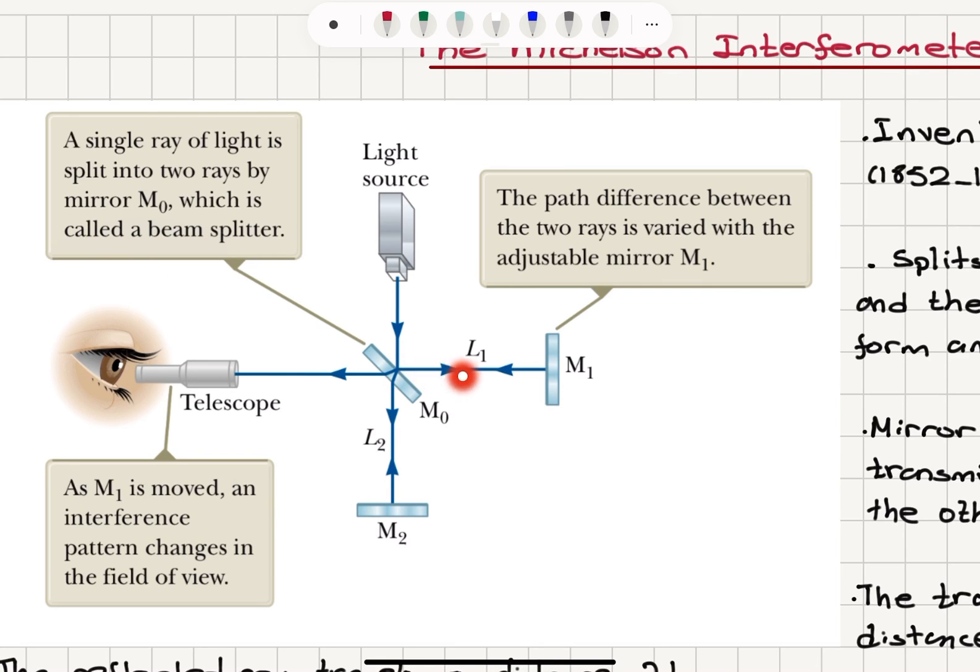A single ray of light is split into two rays by mirror M0, which is called the beam splitter. We have half the intensity traveling to mirror M1 on the right and half the intensity is transmitted, traveling towards M2, mirror M2.